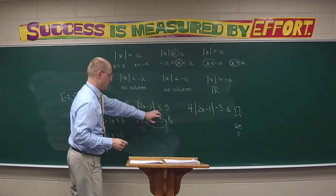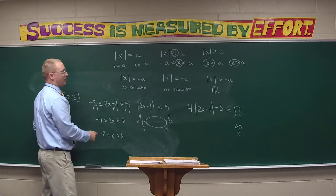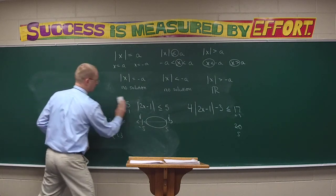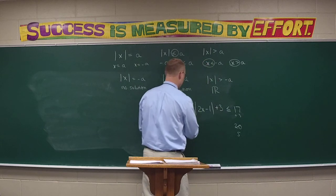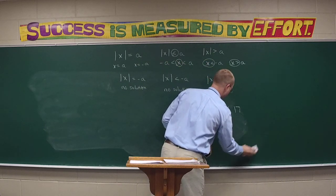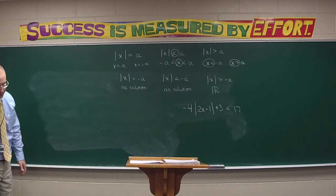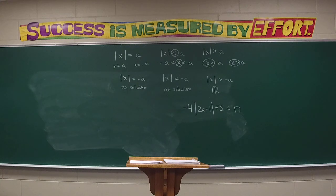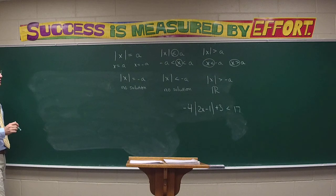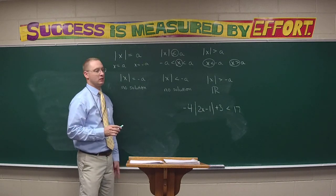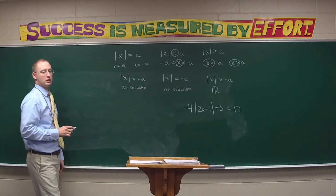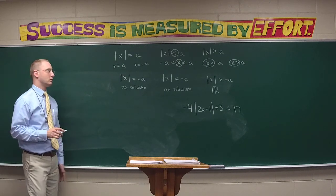Now we solve. What do we do, Maddie? Add one to all three sides to get negative 4 less than or equal to 2x less than or equal to 6. Then divide by 2 to get negative 2 less than or equal to x less than or equal to 3. How would I write this as an interval? Bracket negative 2, comma 3 bracket.